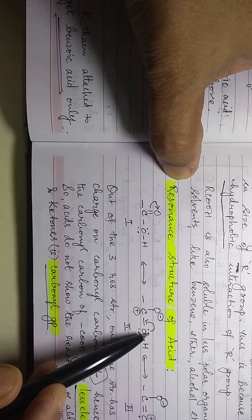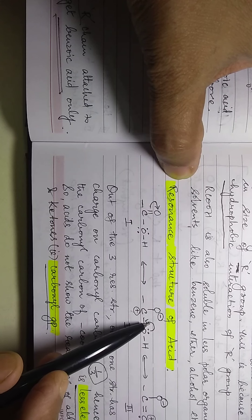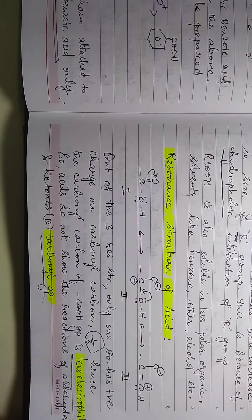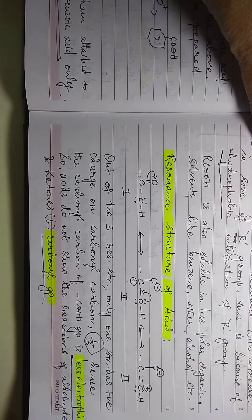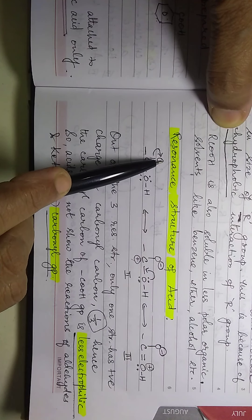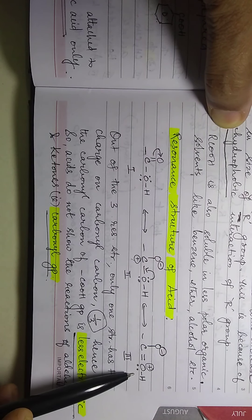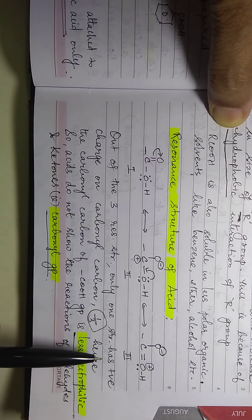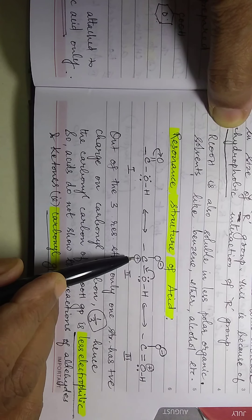When C becomes C plus, the lone pair of electrons on oxygen shifts towards the carbon to neutralize the positive charge, with the result that a double bond is created there and O gets a positive charge. These are the three resonance structures for carboxylic acid — practice and draw them properly in your notebooks. Out of the three resonance structures, only one structure has a positive charge on the carbonyl carbon.